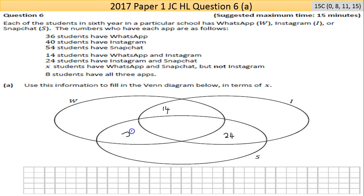Now eight students have all three. If I read this right, 14 students have WhatsApp and Instagram, but eight of those 14 are taken up by having all three, so you take them away. That's 14 take away 8 is 6. 24 take away the 8 here would give me 16.